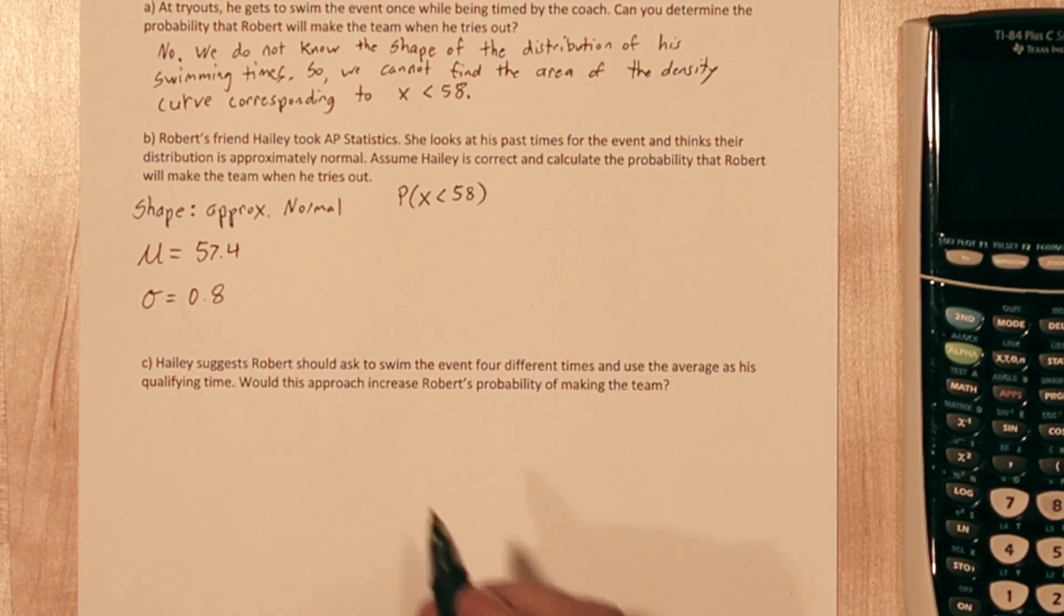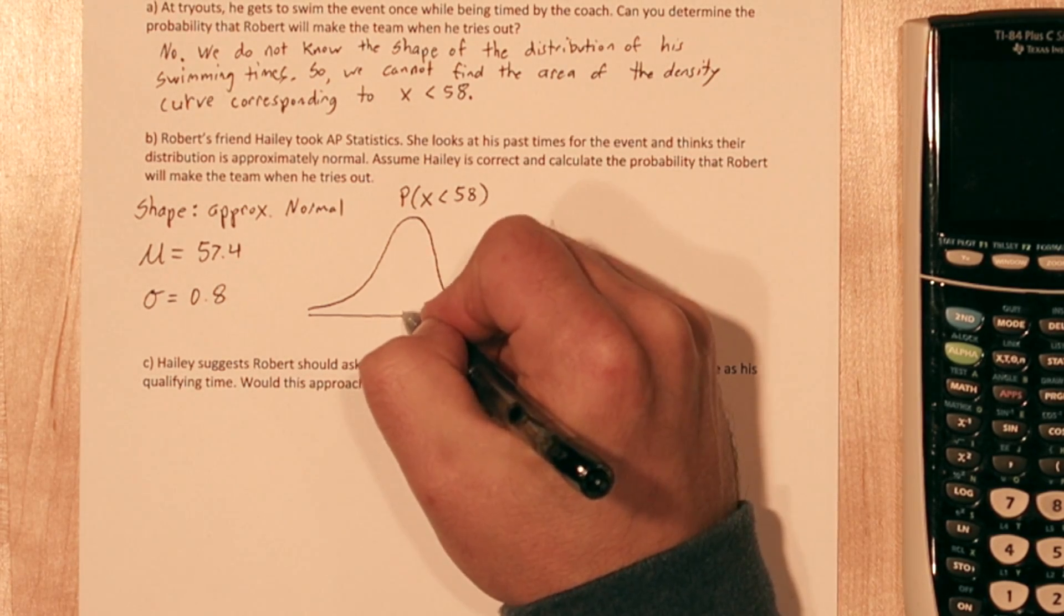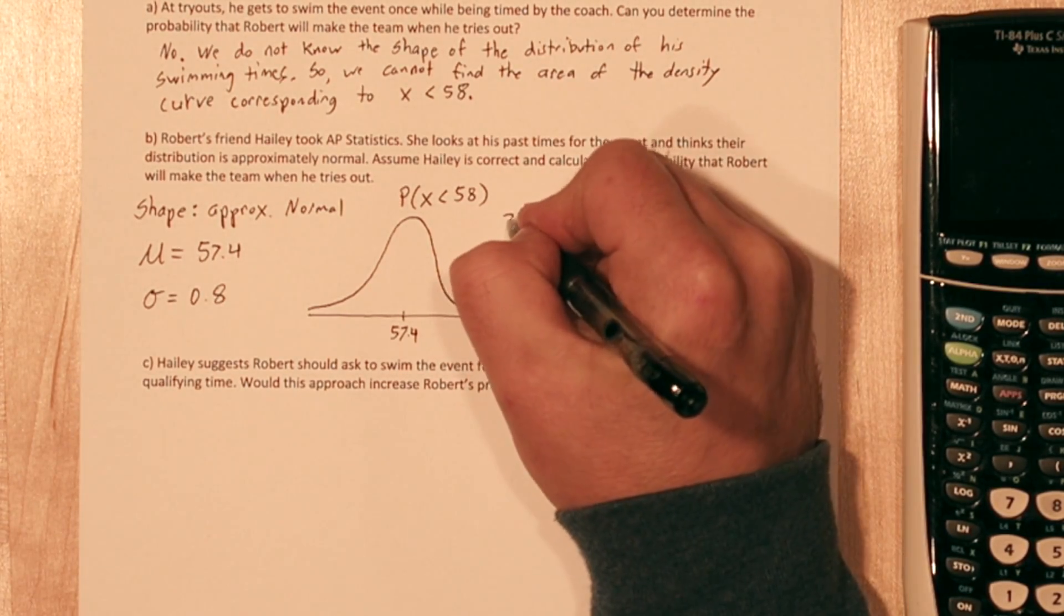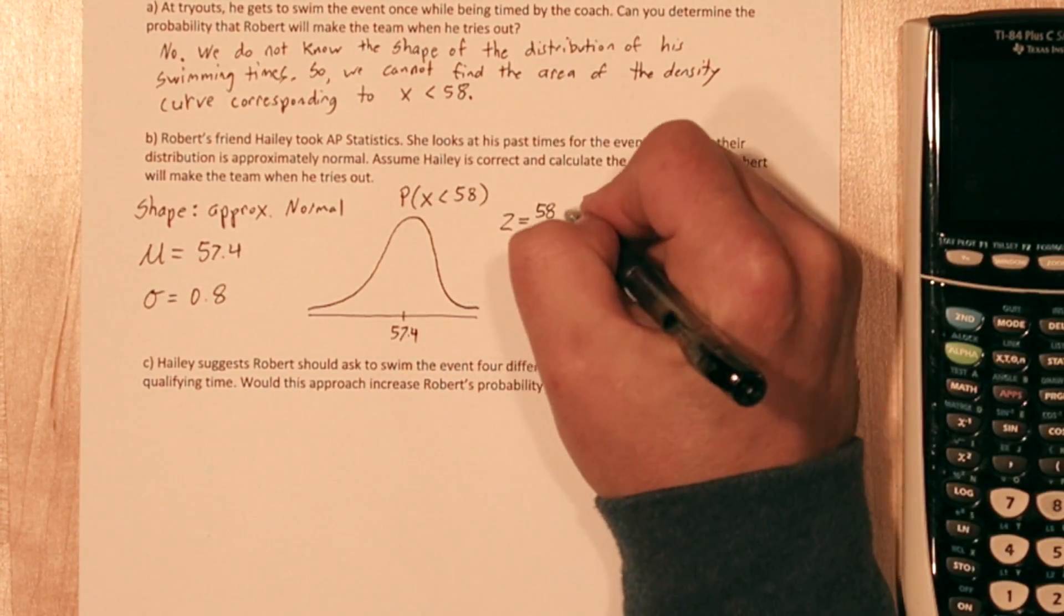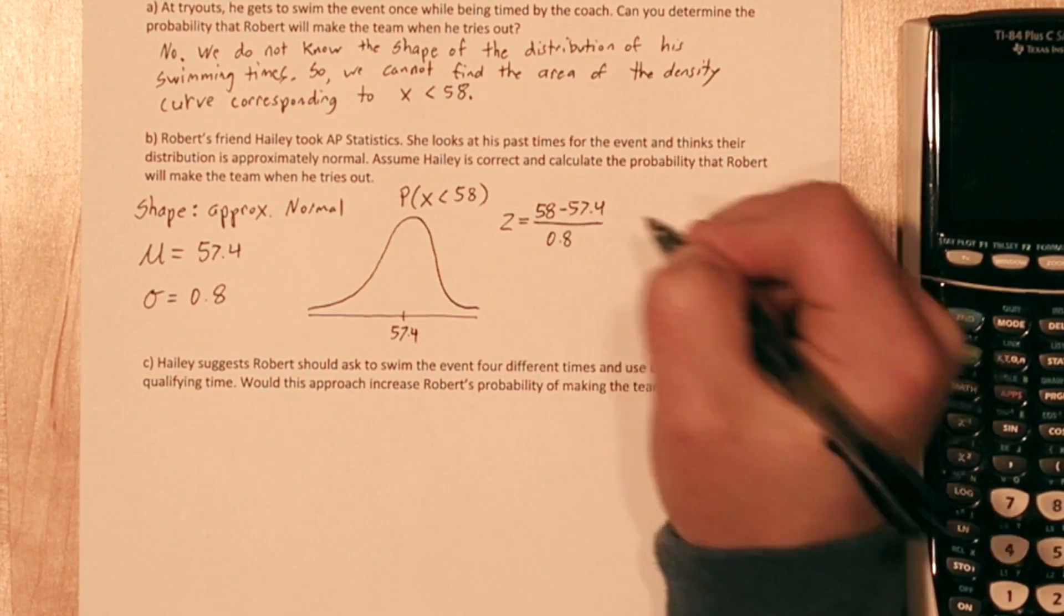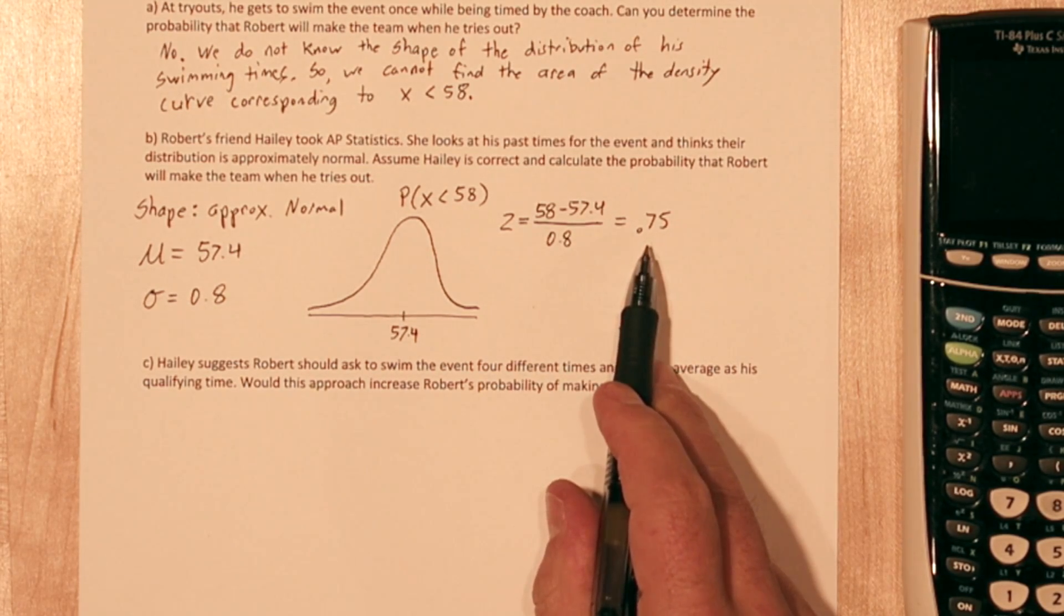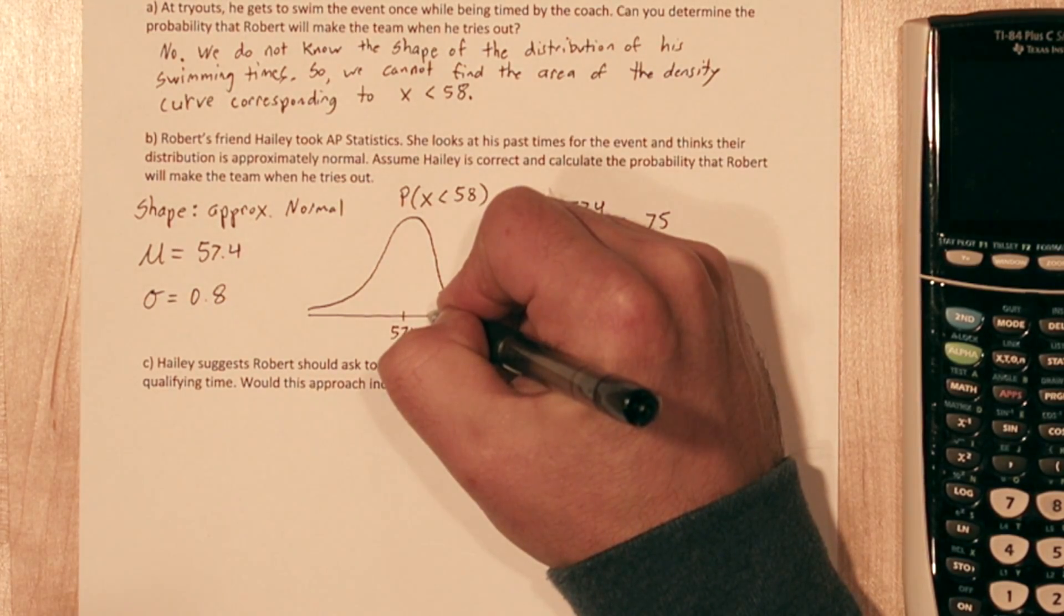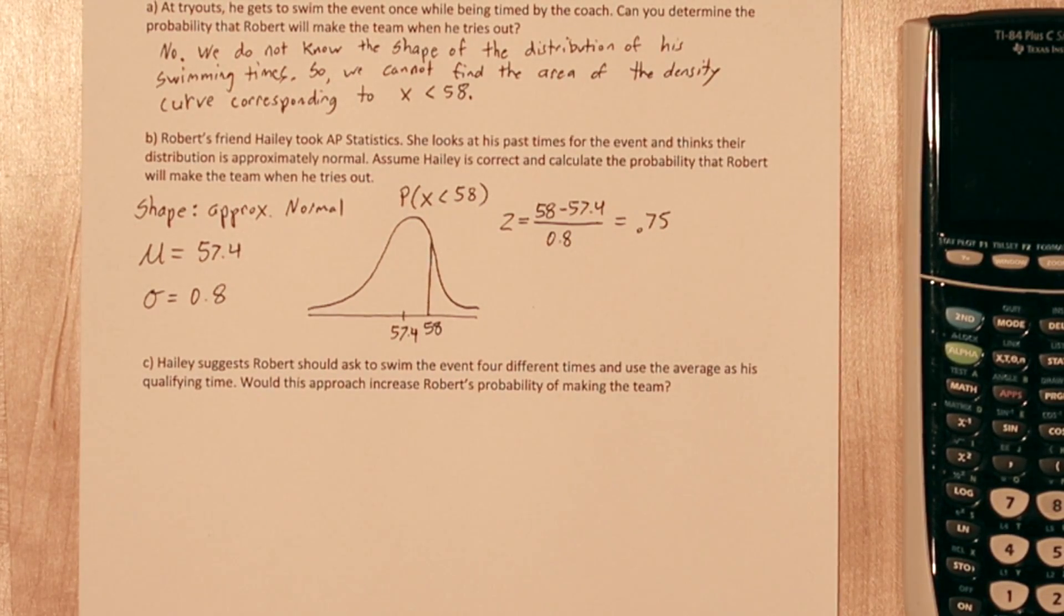Since the shape is approximately normal, we can draw the normal curve. The center of this curve is at the mean, 57.4. To figure out where the 58 is, we can find the z-score. The z-score is calculated with this formula. We start with 58, the value of interest, subtract the mean, 57.4, and divide by the standard deviation 0.8. That gives us the value of 0.75. That's the z-score. And what it means is 58 is 0.75 standard deviations above the mean. That's probably about right here. So the area of interest is everything to the left of that 58. Let's shade that in.